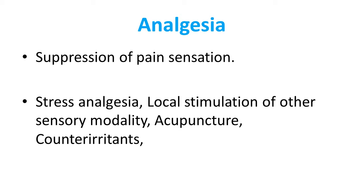Analgesia is the suppression of pain sensation or loss of pain sensation. Analgesia varies tremendously from person to person. This happens partly from a capability of the brain itself to suppress the input of pain signals to the nervous system by activating pain control systems.